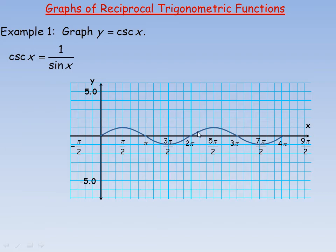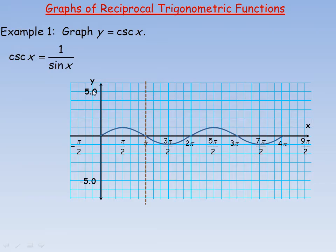What you see in the graph here is a couple of periods of the sine function. I'm going to use the sine function to graph the cosecant function. At the points 0, π, 2π, 3π, 4π, the sine of all those angles is zero, so the value of the denominator would be zero — we'd be dividing one by zero, which is undefined. That means the cosecant function will have vertical asymptotes at x = 0, π, 2π, 3π, 4π, and so on — at every multiple of π.